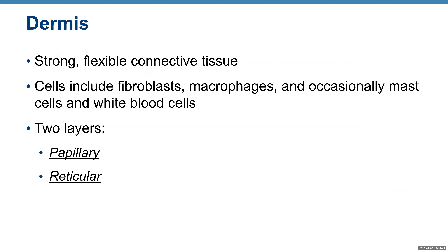Here's the dermis — it's a strong, flexible connective tissue. Cells include fibroblasts (the major cells), macrophages, occasionally mast cells, and white blood cells. Dermis is divided into two layers: papillary and reticular.